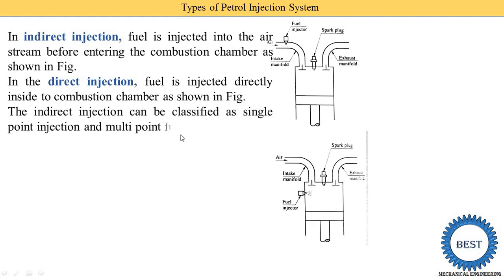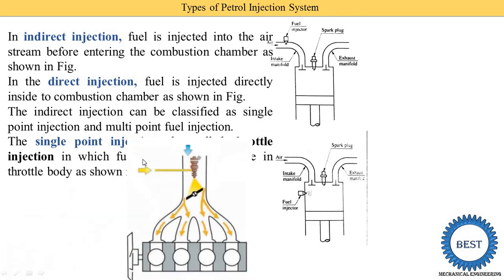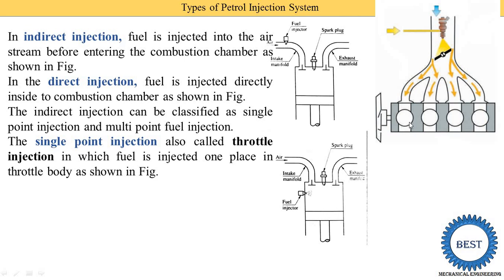Indirect injection can be classified as single point injection and multipoint injection. Single point injection is also called throttle injection, in which fuel is injected at one place in a throttle body. For a four-cylinder engine, only one common fuel injector is provided. Air and petrol are mixed here before being supplied to all cylinders — the fuel injector replaces the carburetor. In multipoint injection, a separate fuel injector is used for every cylinder.